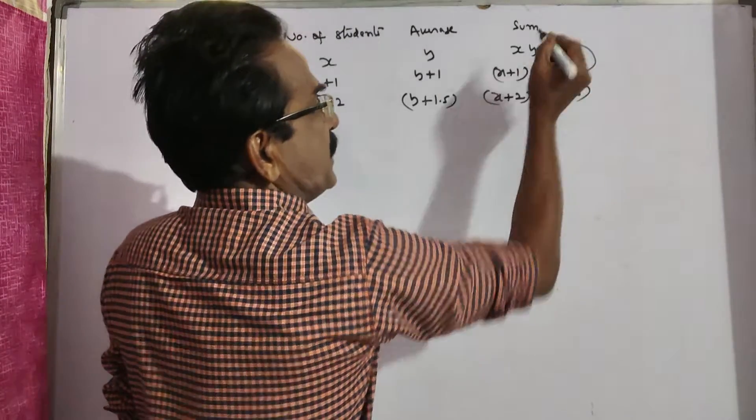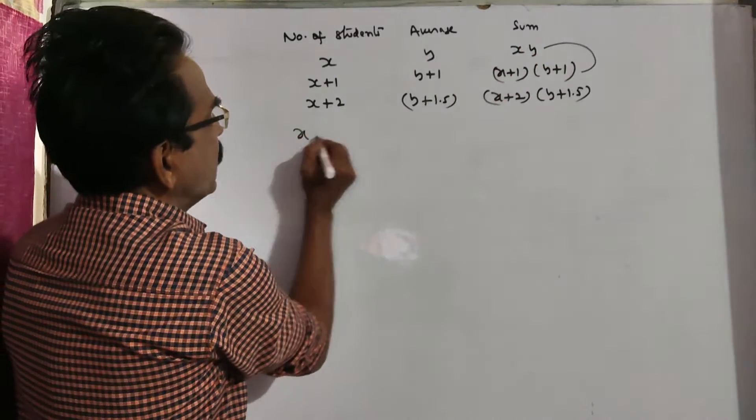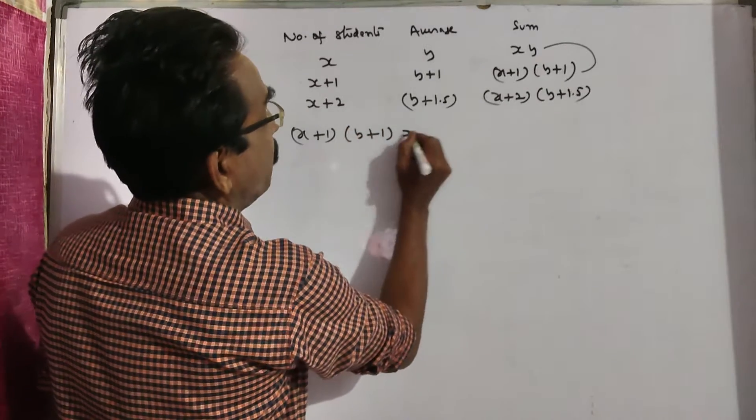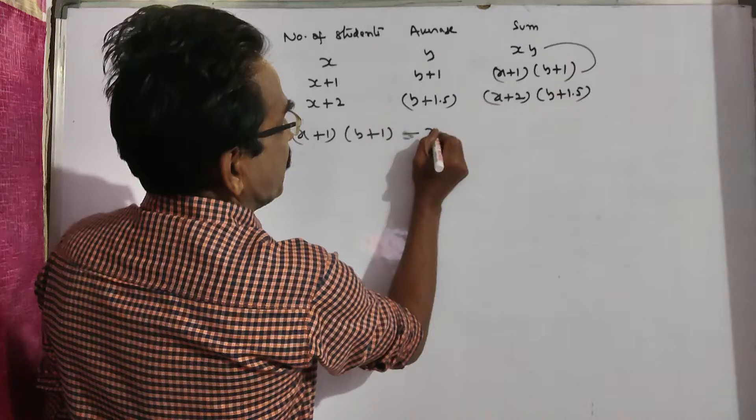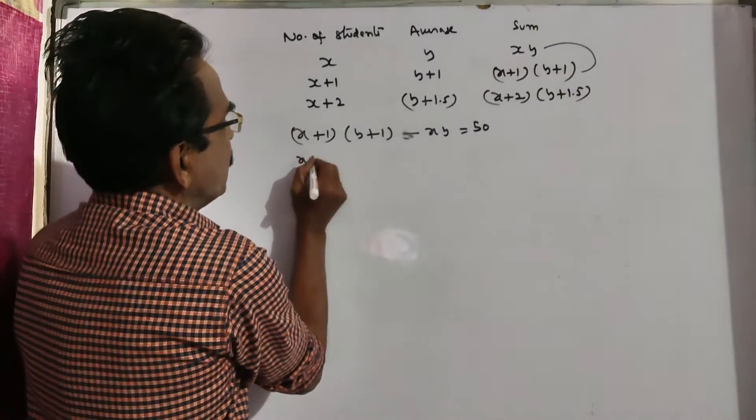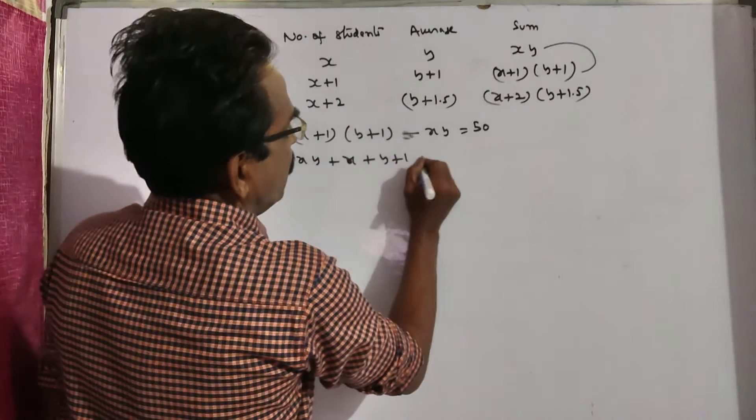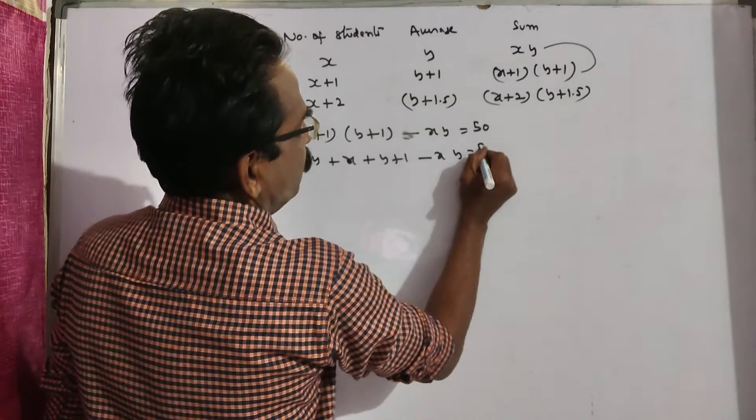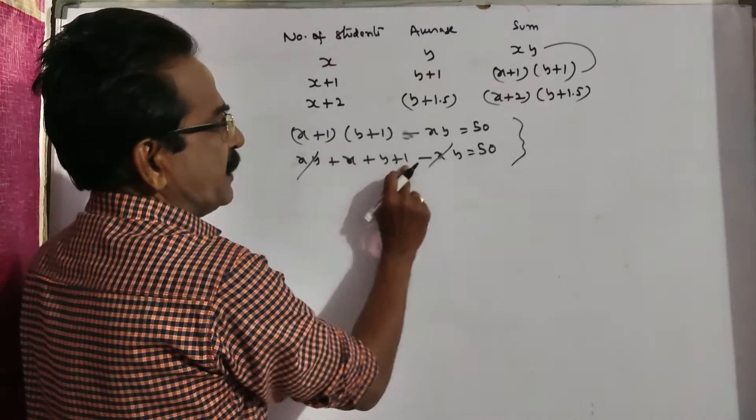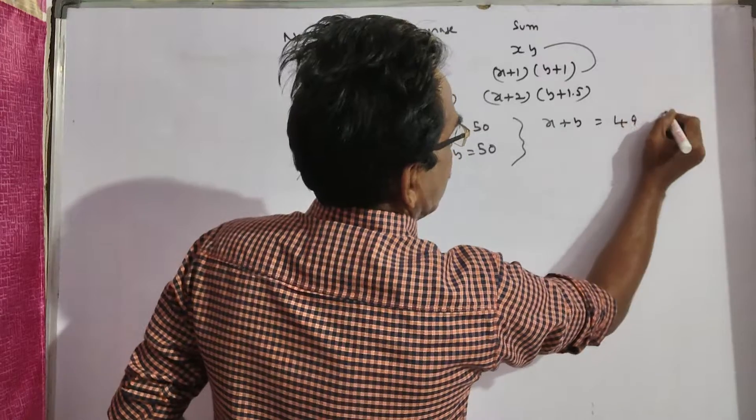Friends, now this minus this is equal to 50. One student of 50 kg is added. So x plus 1 into y plus 1 minus xy is equal to 50. This minus this: xy plus x plus y plus 1 minus xy is equal to 50. It implies x plus y is equal to 50 minus 1 is equal to 49. x plus y is equal to 49 is the first equation, friends.